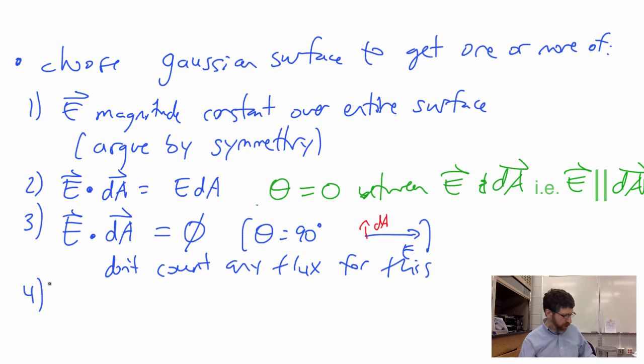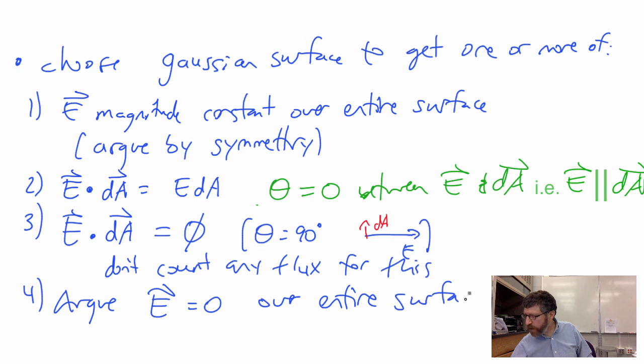Another situation we could shoot for would be if you can argue that the field is equal to zero over an entire surface or part of a surface. If you can argue that, then it's really easy to do your integral because it's just zero. If it's zero everywhere, when you integrate over that part of the surface, you get zero for the flux.